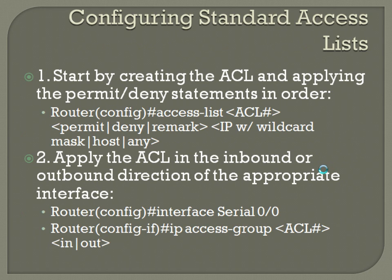Configuring standard access lists: start by creating the ACL and applying the permit and deny statements in order. From global configuration mode, use the command: access-list, the number of the ACL — which can be 1 through 99 or 1,300 through 1,999 — then your permit, deny, or remark. Permit allows the traffic to go through; deny stops the traffic from going through.